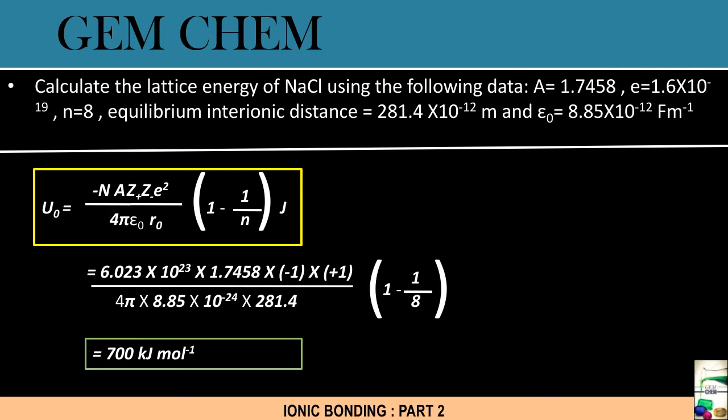So 6.023×10²³ × 1.7458 × -1 × +1. This formula has a minus in the front, so this minus and this minus gets cancelled, we get a positive value. Here it will be 1 by 8, so N value is substituted as 8, and R₀ value is substituted as this equilibrium interionic distance. Ultimately, the value which we obtain of the lattice energy is near about 700 kJ per mole.